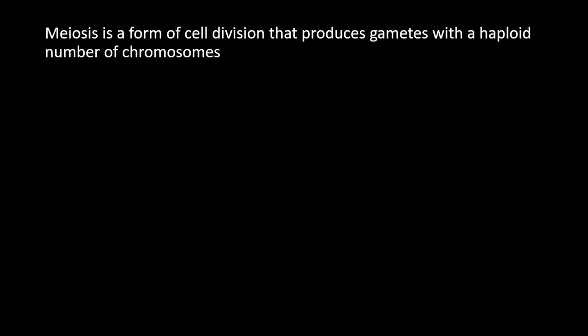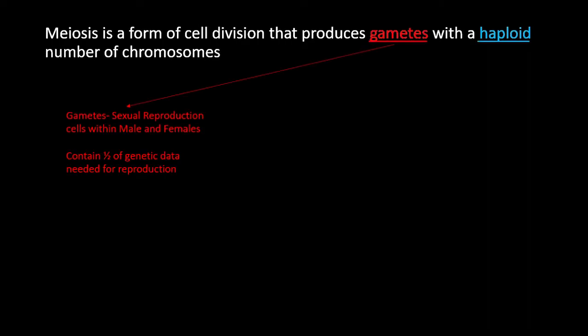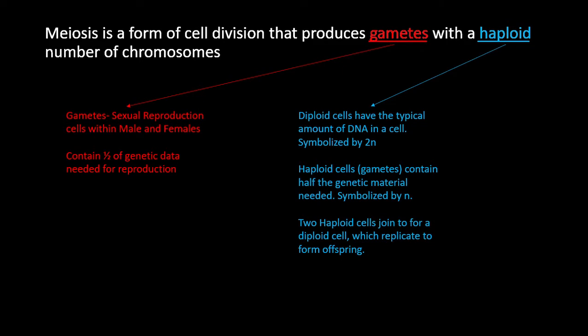The first unit is meiosis. Meiosis is a form of cell division that produces gametes with a haploid number of chromosomes. Gametes are sexual reproduction cells within male and females. They contain one half of the genetic data needed for reproduction. A diploid cell has a typical amount of DNA, symbolized by 2n.